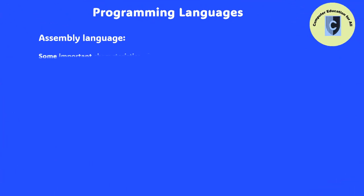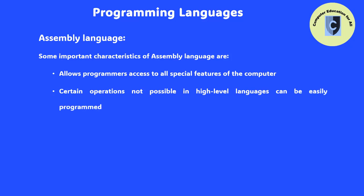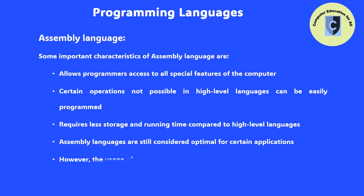Some important characteristics of assembly language are: assembly language allows programmers to have access to all the special features of the computer they are using. Certain types of operations which are not possible in high-level languages are easily programmed using assembly language. Generally, a program written in assembly language will require less storage and less running time than one prepared in a high-level language. Assembly languages are still the best choice in some applications, but their use is gradually declining.